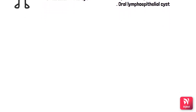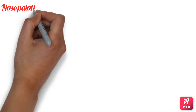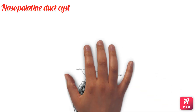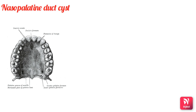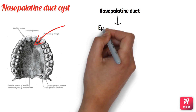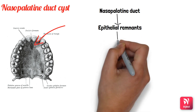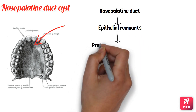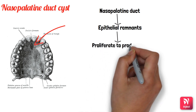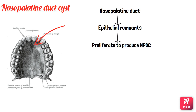Firstly, we will look at nasopalatine duct cysts. This is the most common of all non-odontogenic cysts, present in the midline of the anterior maxilla. The nasopalatine duct is present within the incisive canal and is formed during palate formation. It usually undergoes progressive degeneration, but sometimes there is persistence of a few epithelial remnants. These epithelial remnants become the source of epithelium to give rise to the nasopalatine duct cyst — these are the cells that proliferate to produce this cyst.